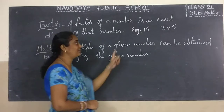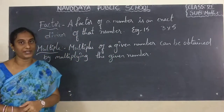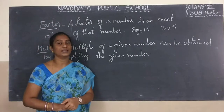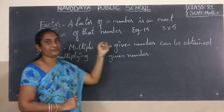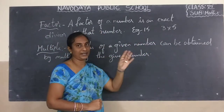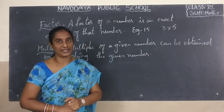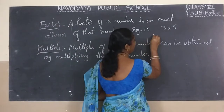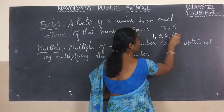For example, if you take 15, what are the factors for 15? 3 divides 15 completely, and 5 divides 15 completely. So the factors for 15 are 1, 3, 5, and 15.